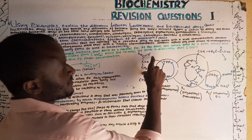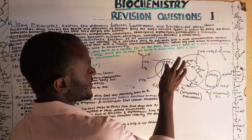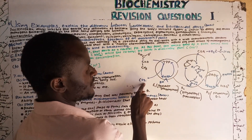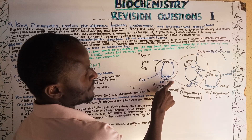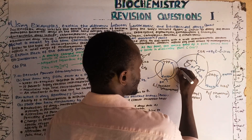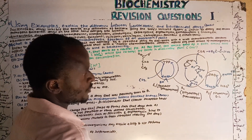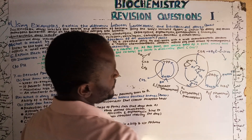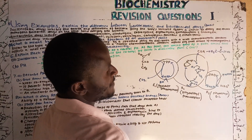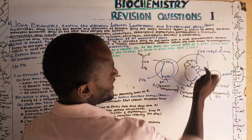To summarize pyruvate decarboxylation: pyruvate interacts with TPP; TPP's prosthetic group — the five-membered ring — binds pyruvate and kicks off carbon dioxide to form hydroxyethyl-TPP. Hydroxyethyl-TPP swings to E2 and interacts with lipoic acid, where the acetate group attaches to lipoic acid to form acetyl lipoamide.